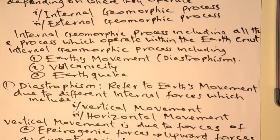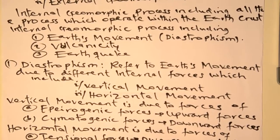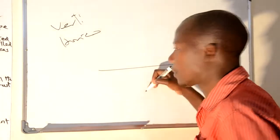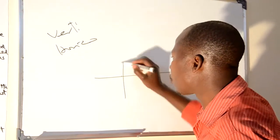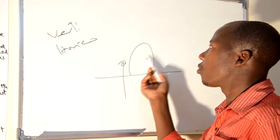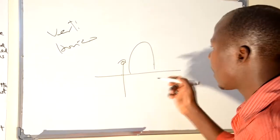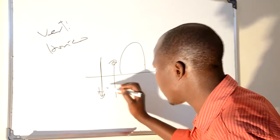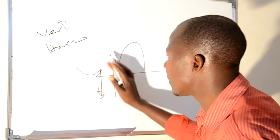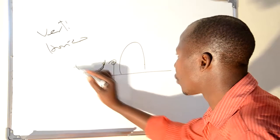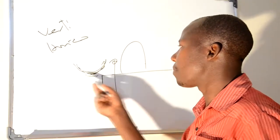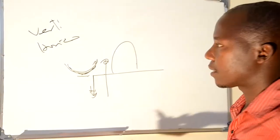Diastrophism refers to the earth movement due to different internal forces, which are vertical movement or horizontal movement. Dear students, whenever we talk about vertical movement, this is the process of land formation which takes place in terms of vertical direction. It is the situation of material moving from downwards to upwards, or from upwards to downwards, causing different formations. The material can be forced to go upwards, which can cause the formation of hills, mountains, or uplifted areas. But wherever the earth moves downwards, it can cause the formation of depression, for instance a basin like Victoria Basin, and wherever it is filled with water we obtain a lake.